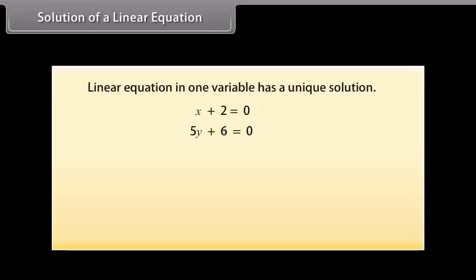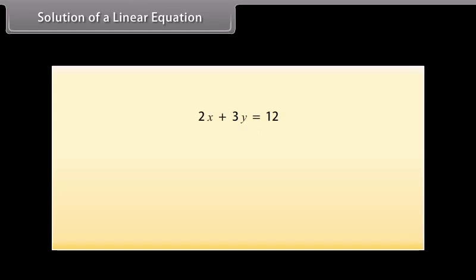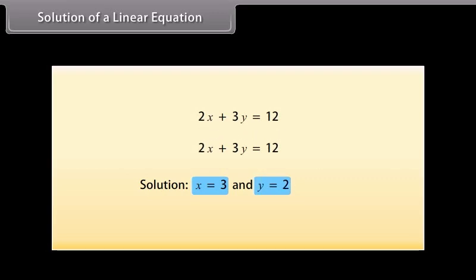Every linear equation in one variable has a unique solution. But how many solutions do linear equations in two variables have? As there are two variables in the equation, its solution means a pair of values — one for X and one for Y — which satisfy the given equation. Let us take the equation 2X plus 3Y is equal to 12. Here, X is equal to 3 and Y is equal to 2 is a solution because when you substitute X as 3 and Y as 2, you find that the answer becomes 12.